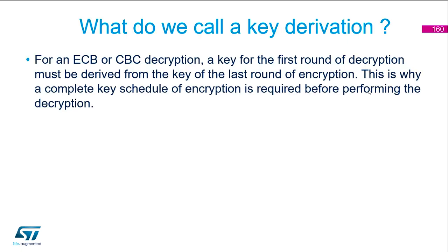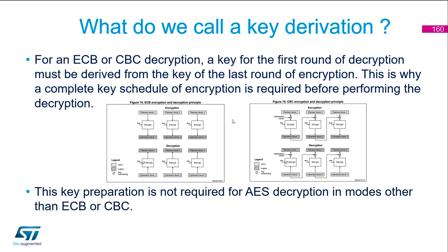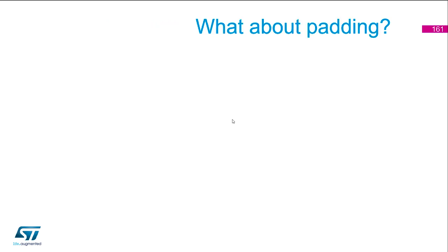What do we call key derivation? For ECB and CBC decryption, a key for the first round of decryption must be derived from the key of the last round of encryption. This is why a complete key schedule of encryption is required before performing decryption. As you can see for ECB, when you want to decrypt, you first have to do key scheduling before being able to decrypt the first block. The same applies to CBC. For all other modes, this key preparation is not required.